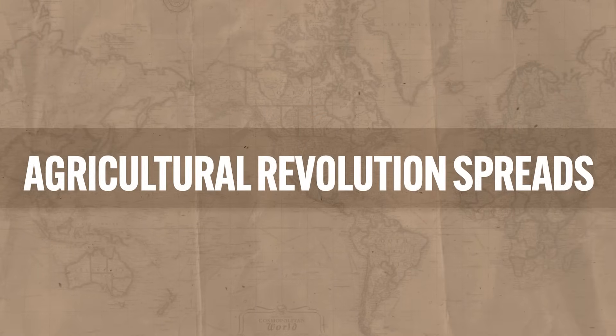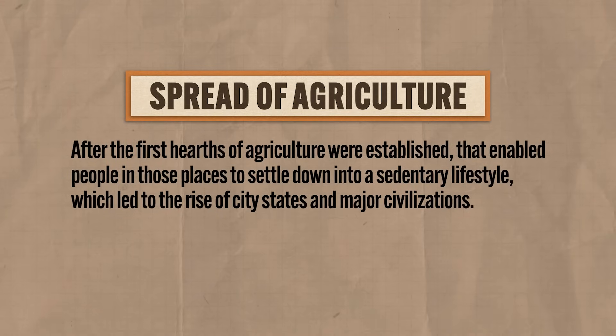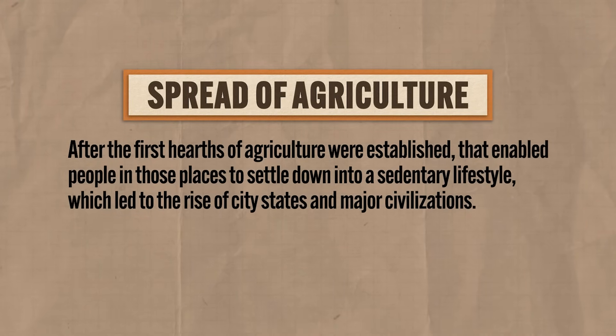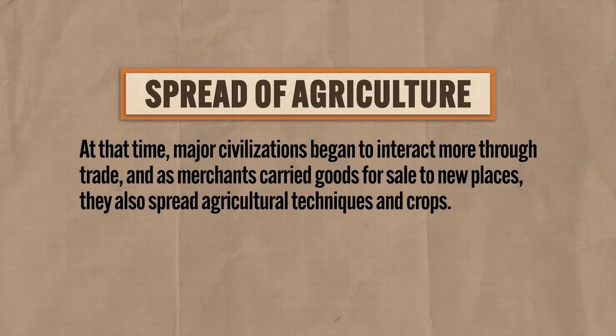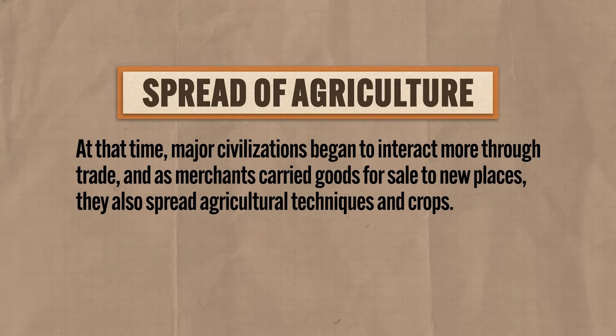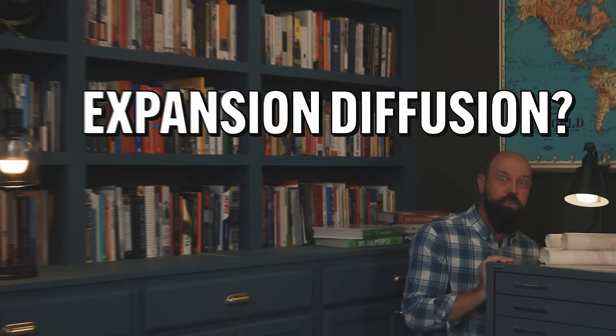Even though these hearths of agriculture grew up independent of one another, eventually the plants and animals they domesticated began to spread to other places. After the first hearths of agriculture were established, that enabled people to settle into a sedentary lifestyle, which led to the rise of city-states and major civilizations. Major civilizations began to interact more through trade, and as merchants carried goods to new places, they also spread agricultural techniques and crops — which is expansion diffusion.